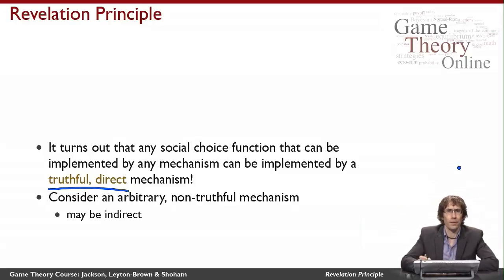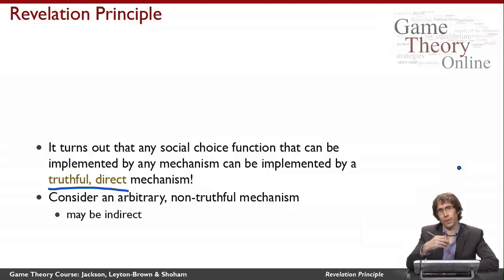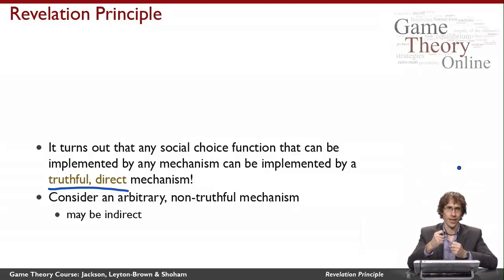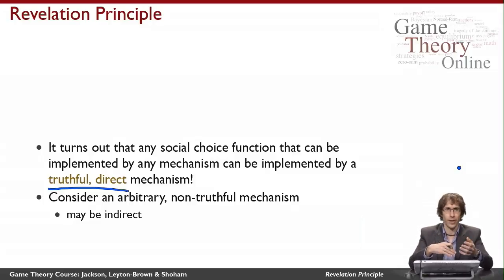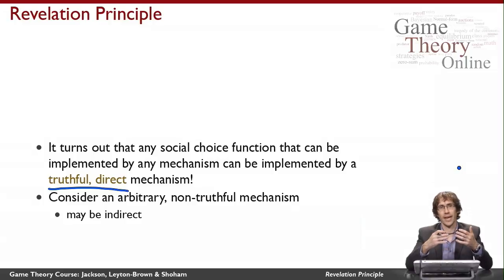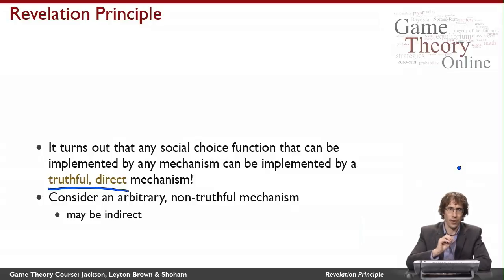A mechanism is direct if it works by having all of the agents simply make a single declaration — you can think of it as writing something down on a piece of paper, giving that to the person who runs the mechanism, and having some decision be made. An indirect mechanism, in contrast, might have a whole sequence of actions and information revelation and subsequent actions that depend on that information revelation, with multiple actions by different agents. An indirect mechanism is essentially any sort of imperfect information Bayesian extensive form game. A direct mechanism, in contrast, is a simultaneous move Bayesian game — it's like the Bayesian version of a normal form game.